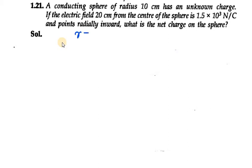We are given the radius as 10 centimeters and the distance as 20 centimeters. These need to be converted into meters, so r = 0.1 m and d = 0.2 m.